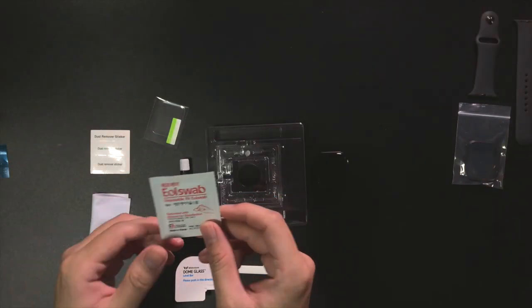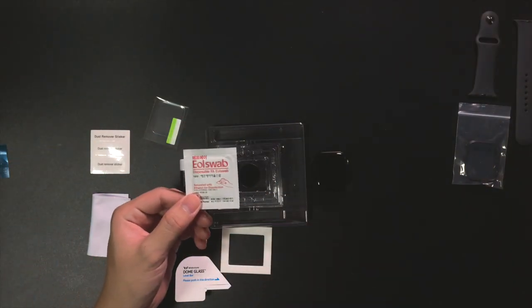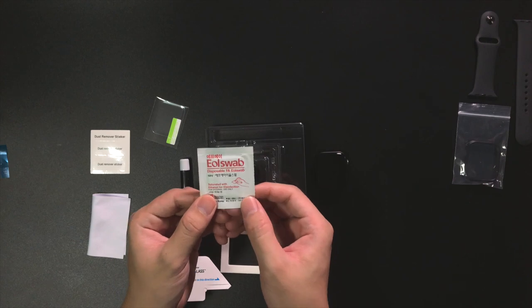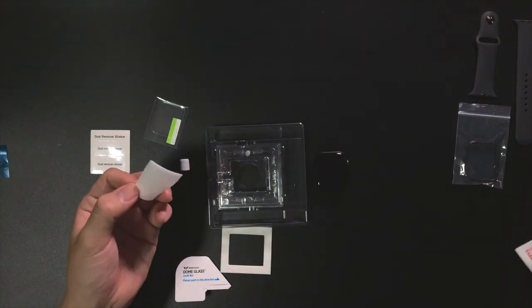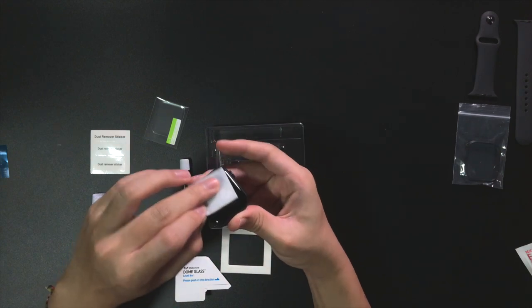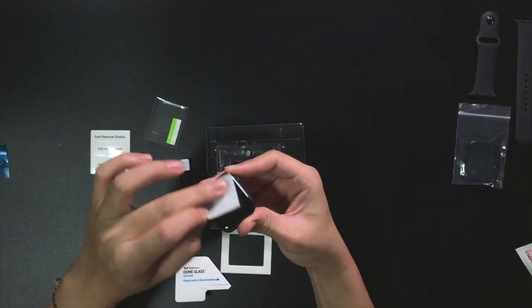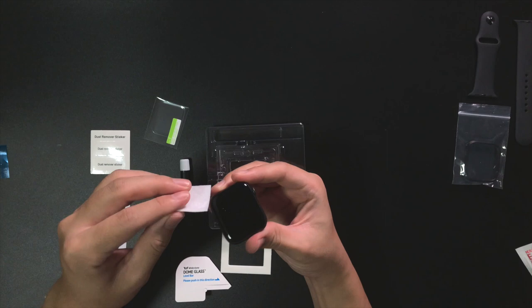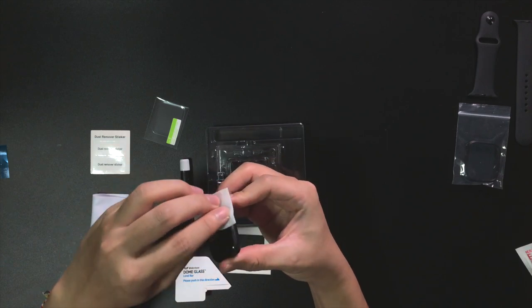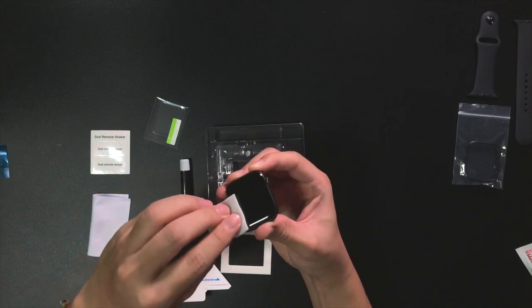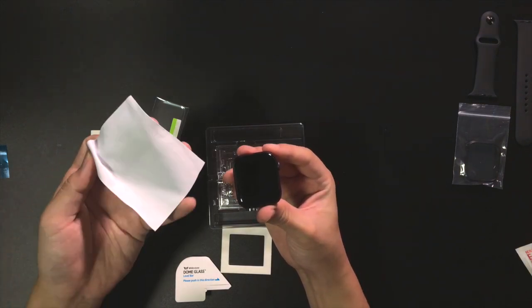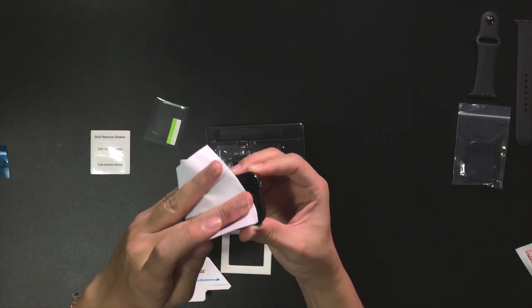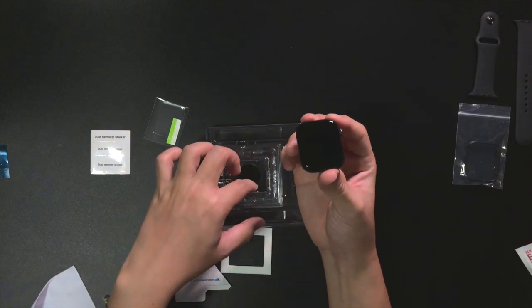All right so right now I'm gonna show you guys how to install and make sure you guys don't make the same mistake that I do. First take the alcohol swipe and start wiping off all the dirt from your Apple watch. After that take the microfiber cleaning cloth and wipe off the dew on the surface and make sure it is dry.